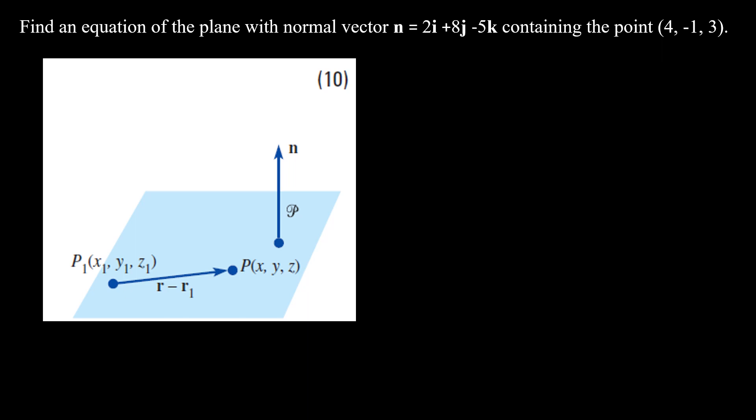Hello everyone, in this video we're still on section 7.5 and here we're doing an example on the equation of a plane. So here we have to find an equation of a plane with the normal vector whose components are 2i hat, 8j hat, negative 5k hat and containing the point (4, -1, 3).